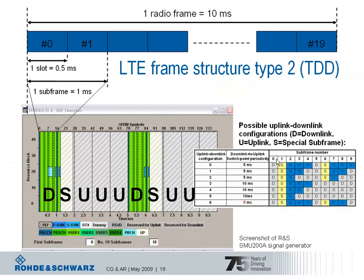This picture shows the LTE frame structure type 2 for TDD — time division duplex. The radio frame structure is the same: 10 milliseconds subdivided into 10 subframes of each 1 millisecond, with the notion of a slot of 0.5 milliseconds. However, since it is TDD, there is a significant difference: uplink and downlink are separated in the time domain, which needs to be reflected in the subframe structure.